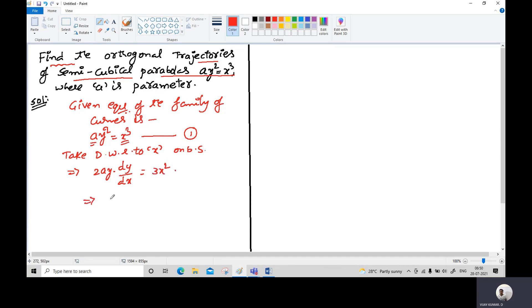From this, obtain the value of a. What is the a value? a = 3x²/(2y·dy/dx). Substitute this value in the given family equation.